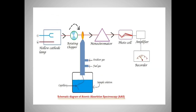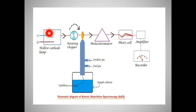The key point to note in the instrumentation of Atomic Absorption Spectroscopy is that the source should be made up of the same element as the element under study. As shown in this diagram, the sample solution and the source are both made of the same element.